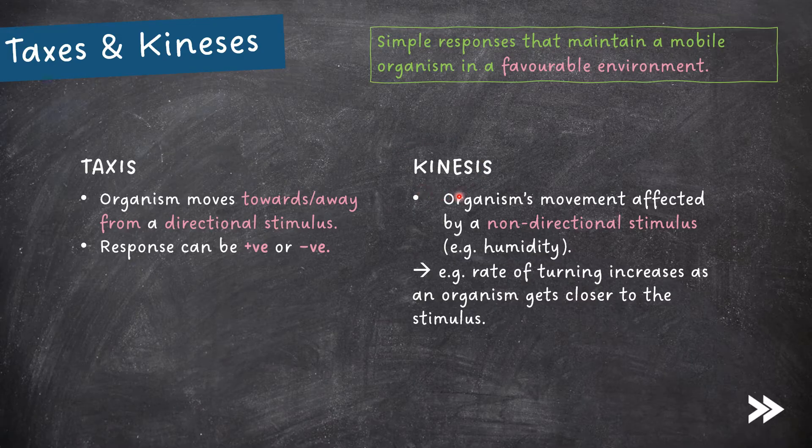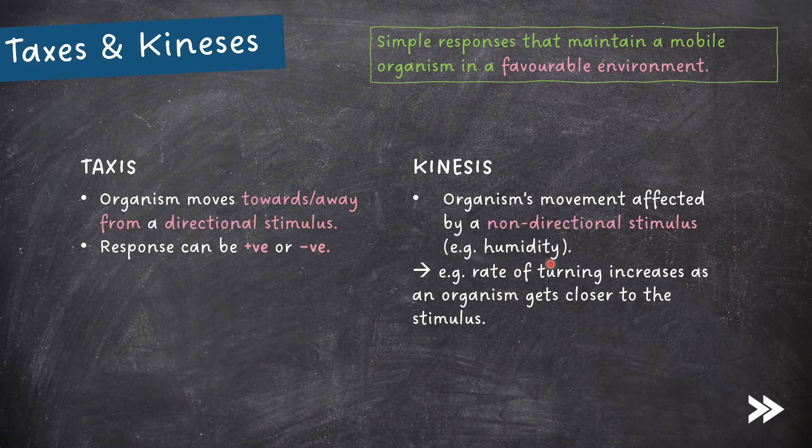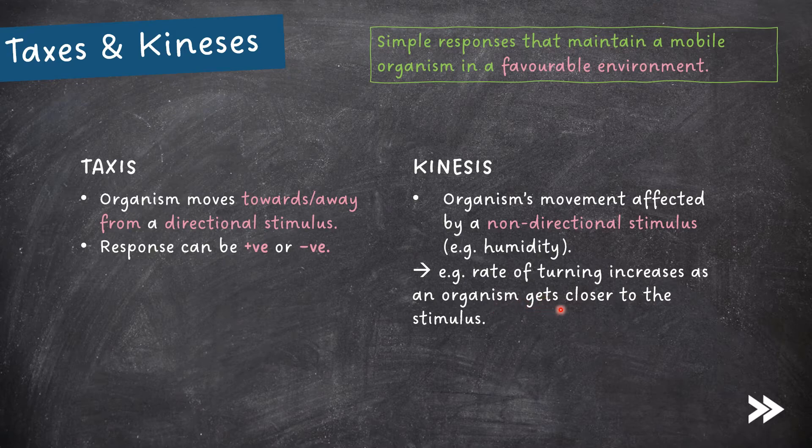In a kinesis, an organism's movement is affected by a non-directional stimulus, such as humidity. For example, the rate of turning of an organism may increase as it gets closer to the stimulus.